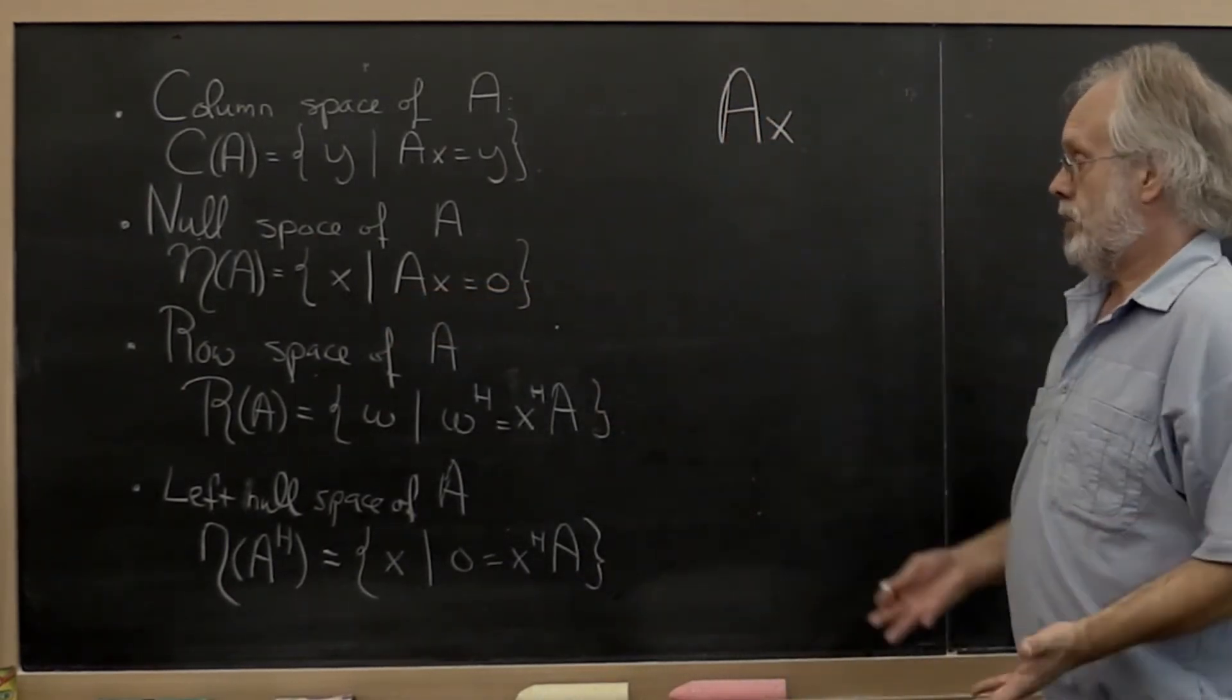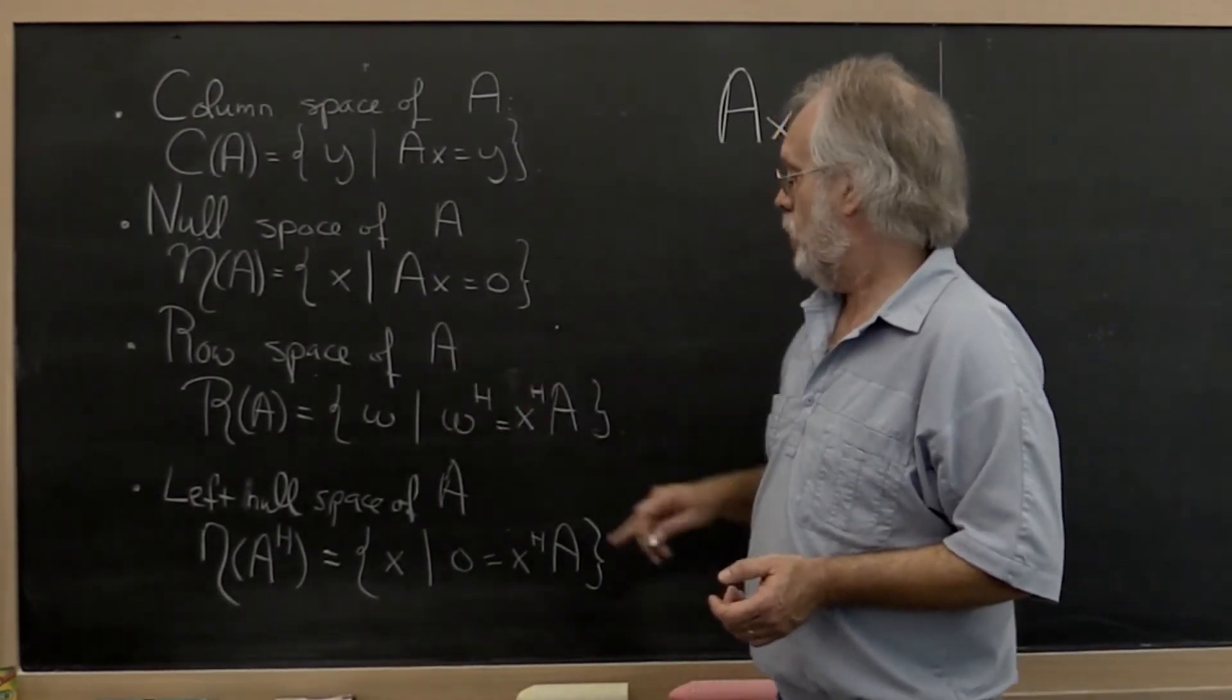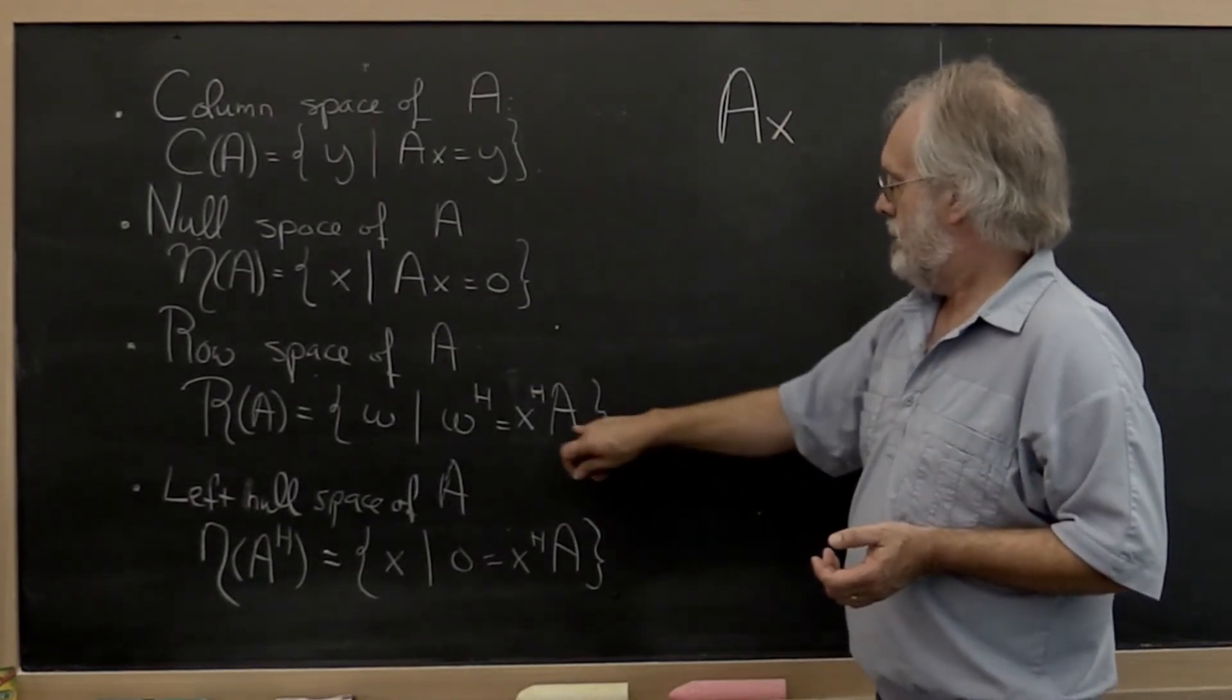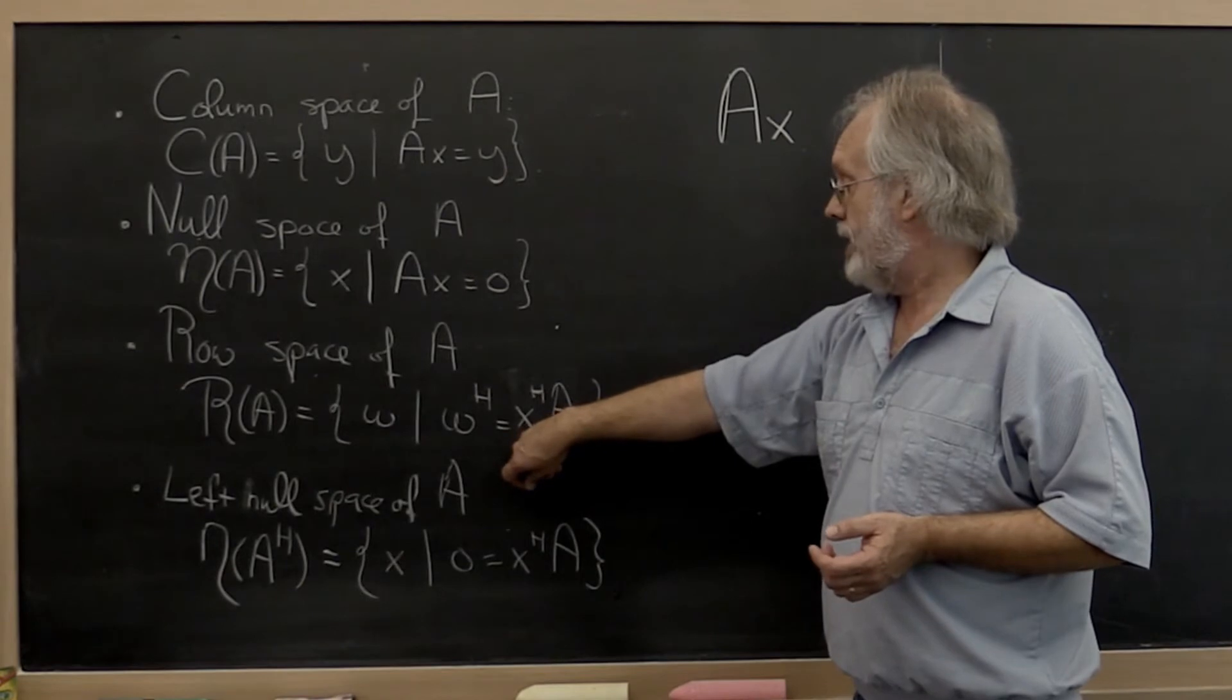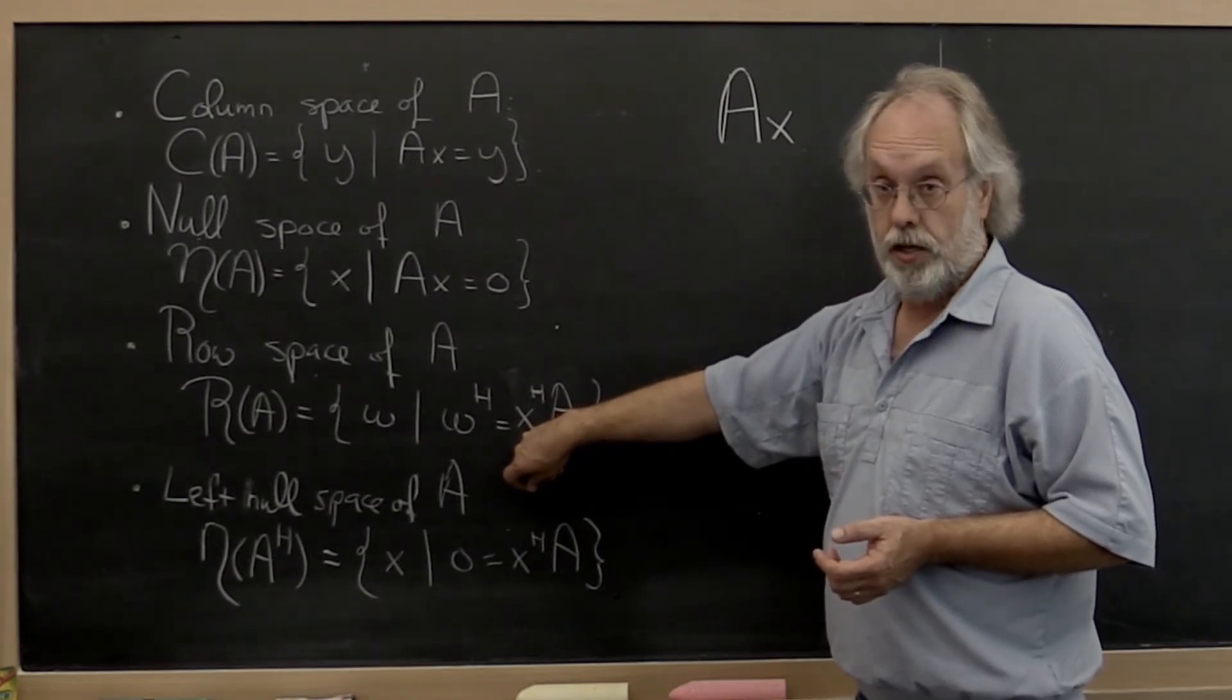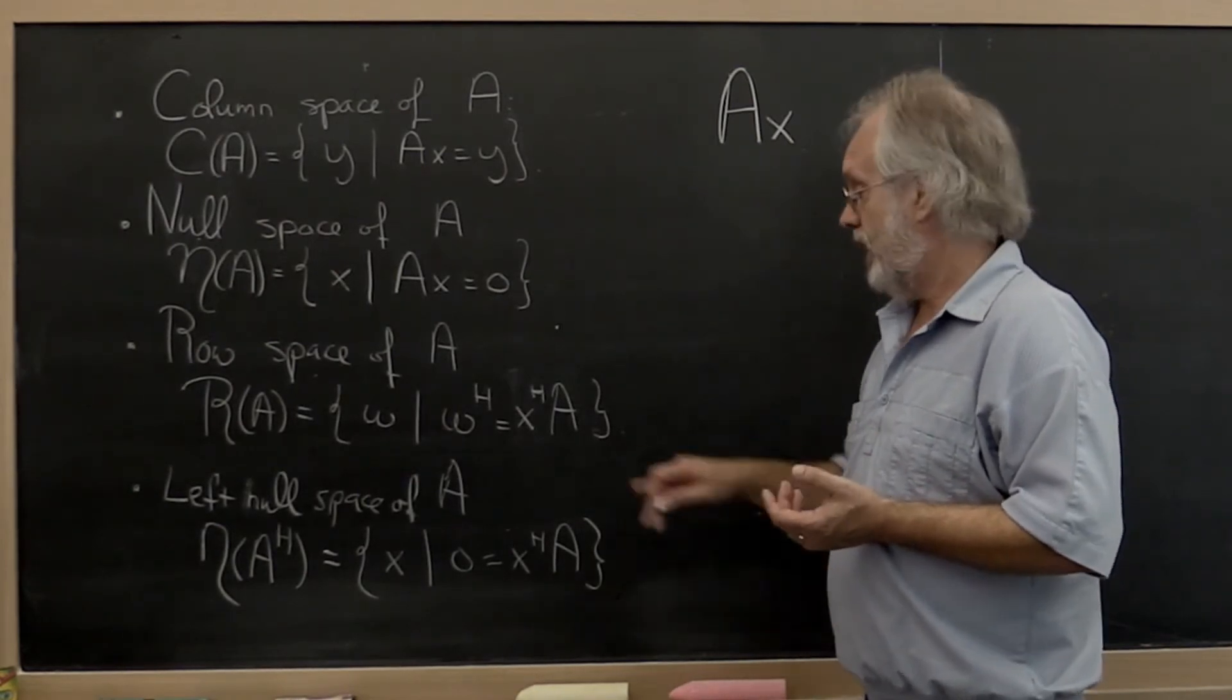And then another space that you found was the row space of A. And the way I like to think of that is if you multiply a matrix A on the left by a vector, a row vector, then what you're doing is you're taking linear combinations of the rows of A.